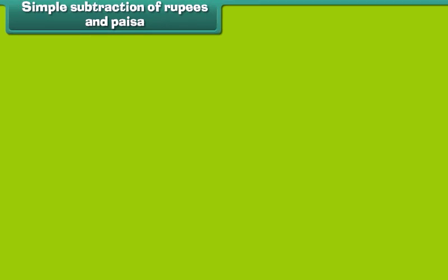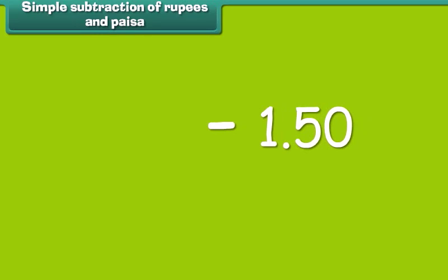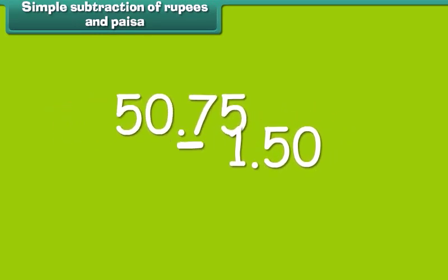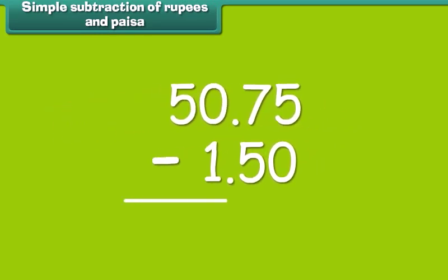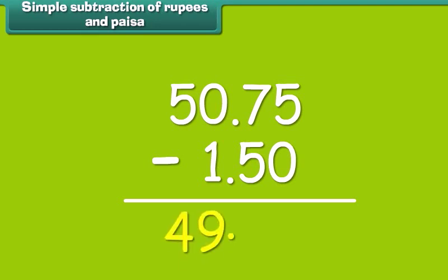Subtraction of rupees and paisa is simple. Subtract 1 rupee 50 paisa from 50 rupees 75 paisa. We first subtract numbers in the paisa column and then in the rupee column. So, the answer is 49 rupees and 25 paisa.